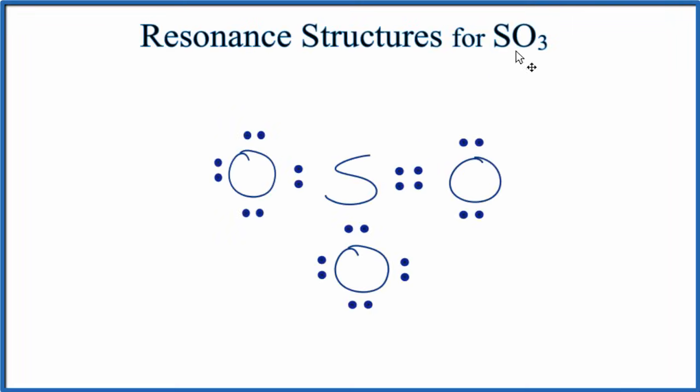There are seven resonance structures for SO3, sulfur trioxide. In this video we'll look at each one of those.